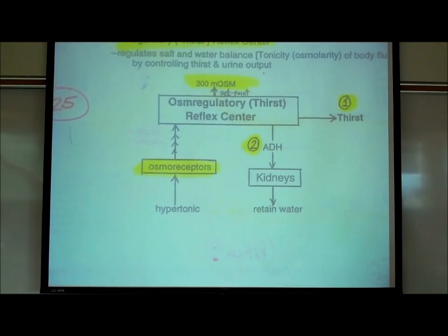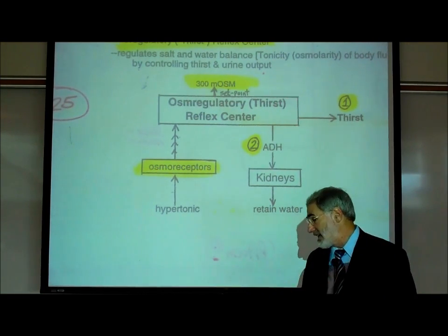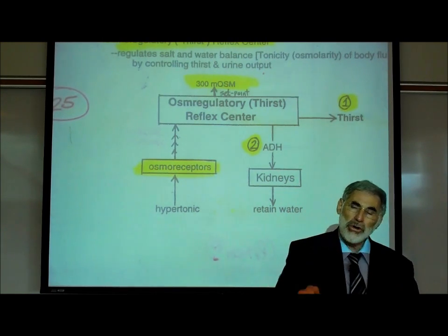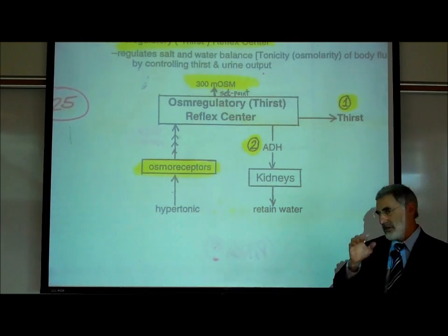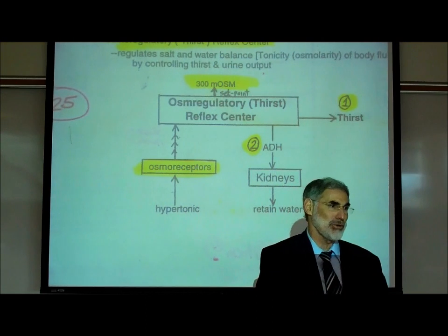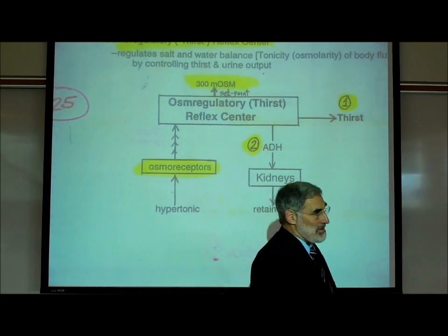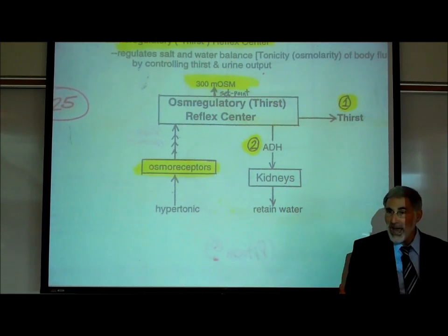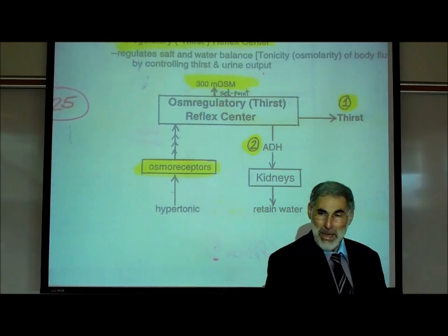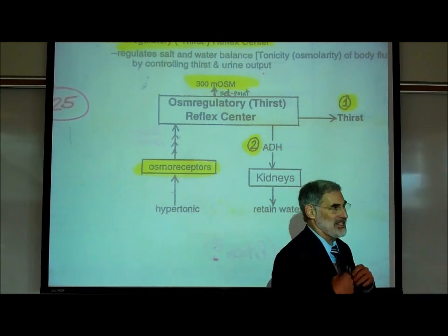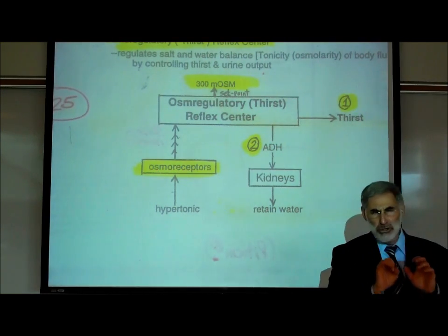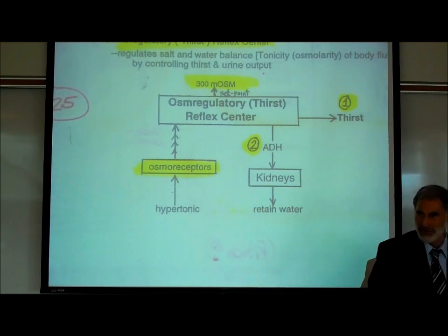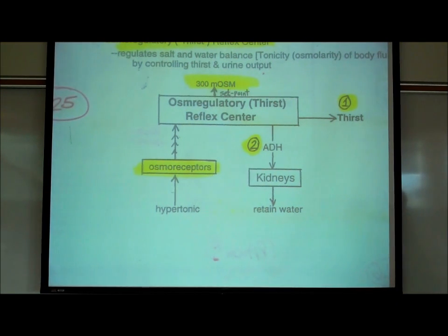This control center works just like all the other control centers. This involves what's known as a negative feedback loop. This whole concept of homeostatic reflexes and negative feedback loops is described over five pages in chapter one of your book. If you read only one chapter, read those five pages about homeostasis and the negative feedback response — it's that fundamental.